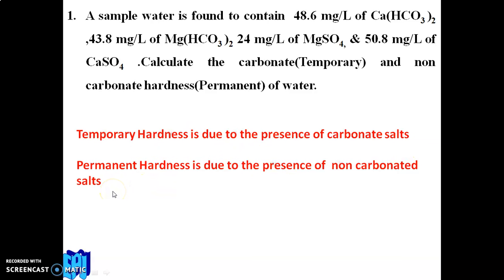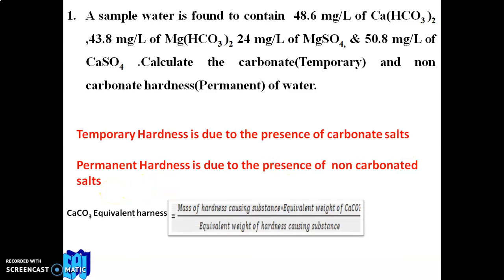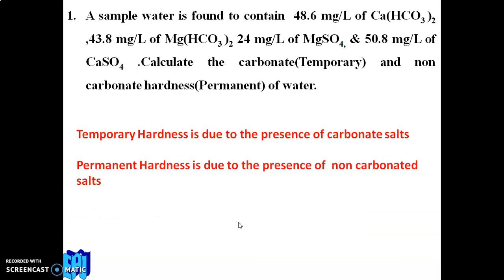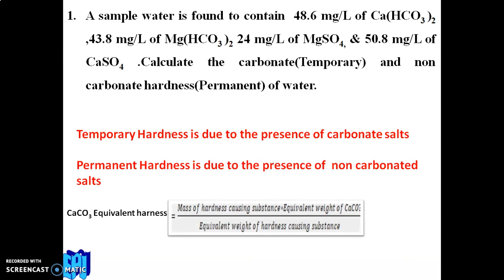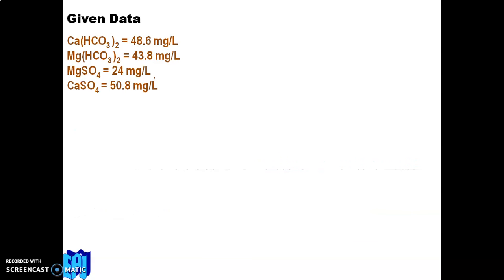The main equation we are familiar with from the last video is: Calcium Carbonate Equivalent Hardness = (mass of the hardness-causing substance × equivalent weight of CaCO₃) ÷ equivalent weight of the hardness-causing substance.